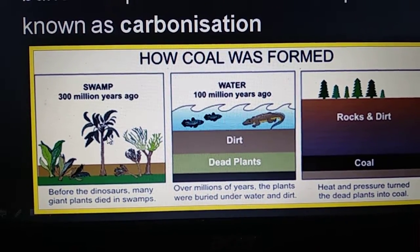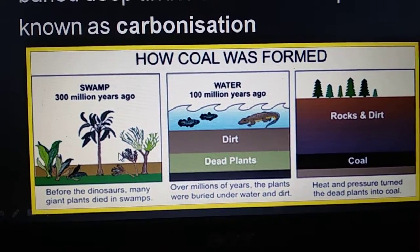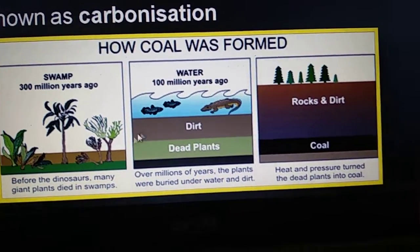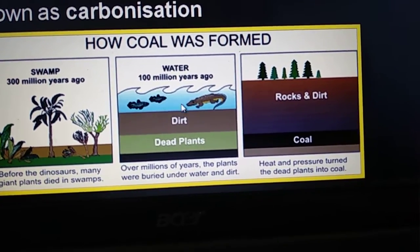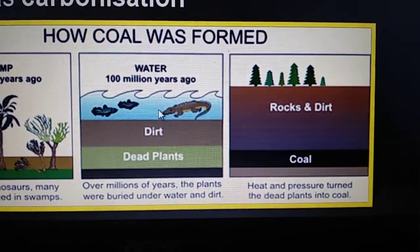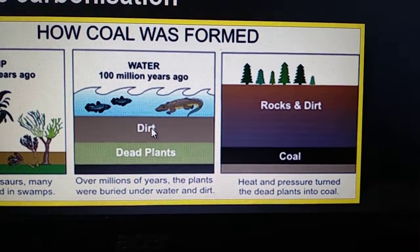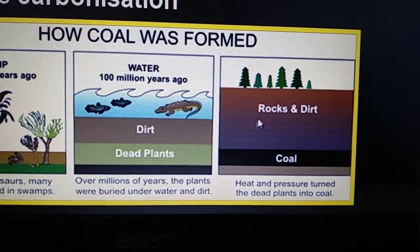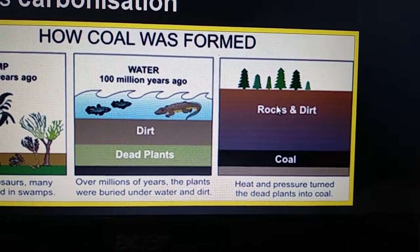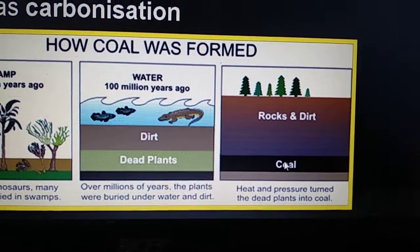Large plants and trees got buried deep under the earth, and for millions of years they were buried under high pressure and high temperature. Then these plants and trees got converted into coal.